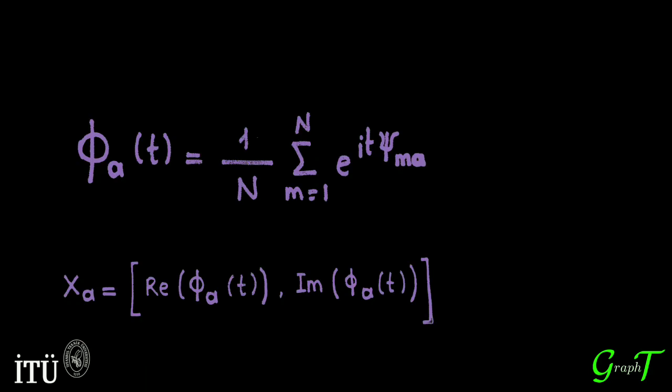Then, the phi function is a distribution function similar to the probability density function. It takes the diffusion pattern information of a node and then its result is a complex number. The real and imaginary parts of the number are kept in an XA matrix.